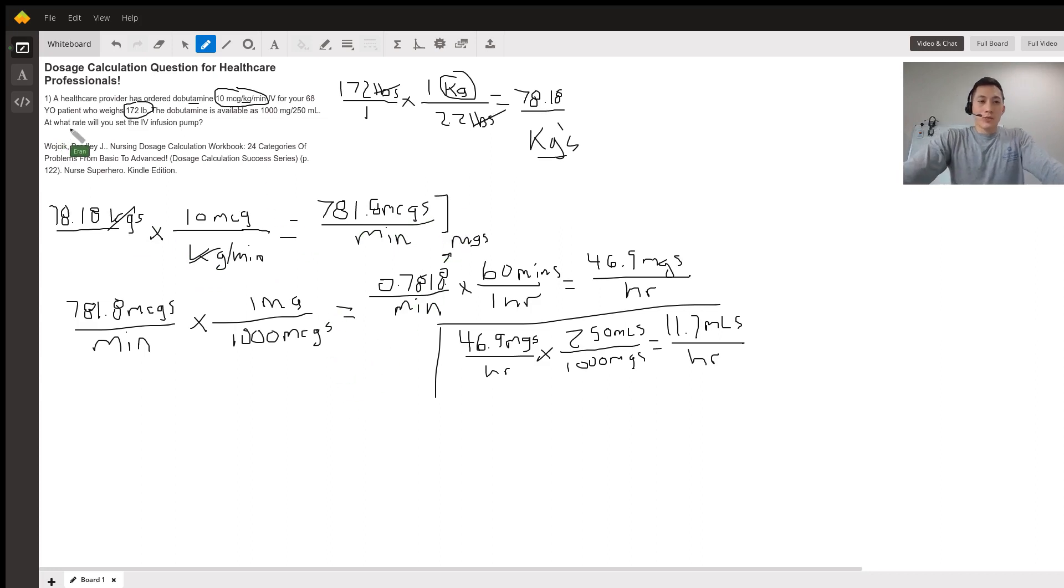The question asks, at what rate will you set the infusion pump? A rate is usually milliliters per hour when setting a pump. We have micrograms, but we need to get this in milligrams. The reason is because the dobutamine available is 1,000 milligrams per 250 milliliters. So milliliters per hour will be our end rate.